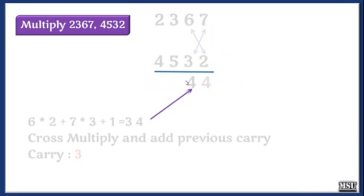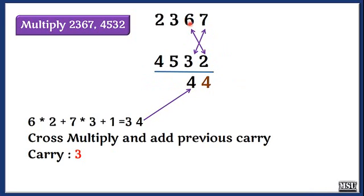Next step, I am going to cross multiply. That is 6 into 2 and 3 into 7, and then I am adding the carry and the result is 34. I am writing 4 and then 3.